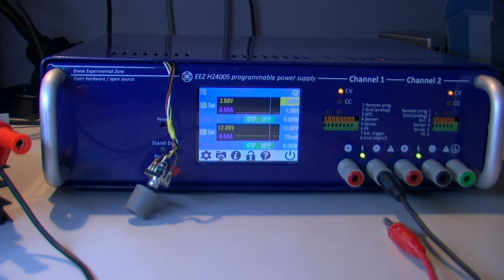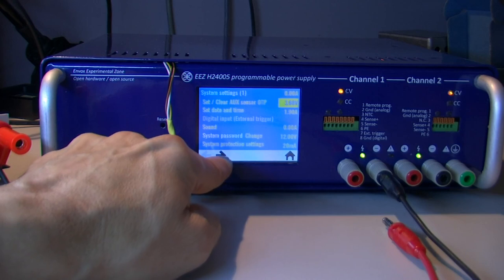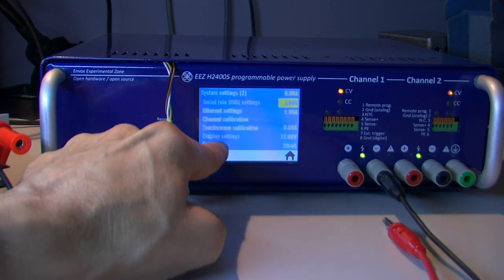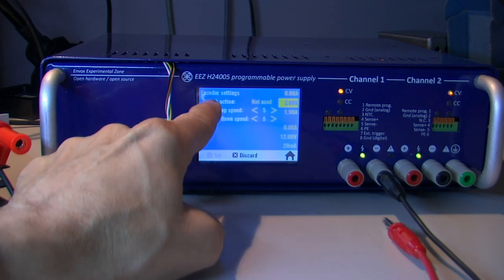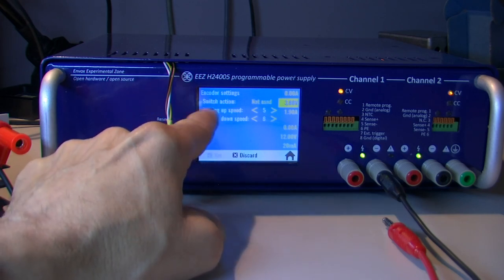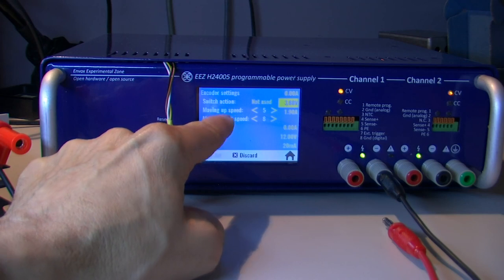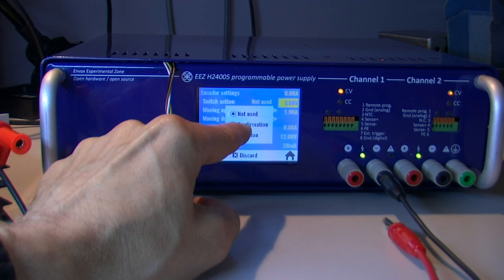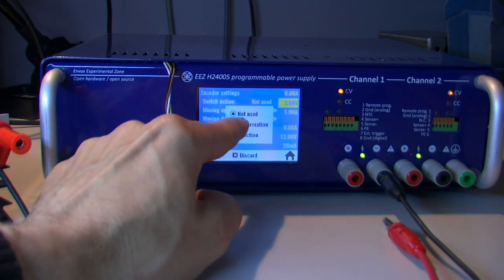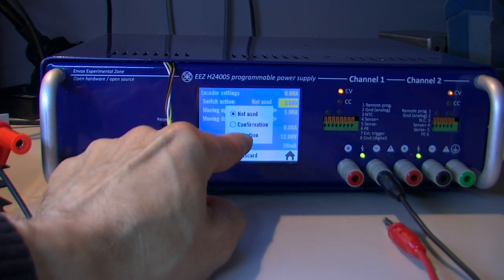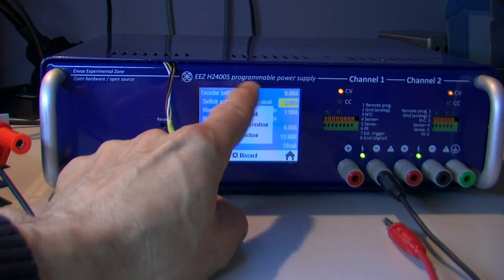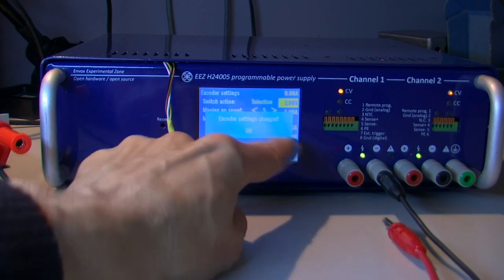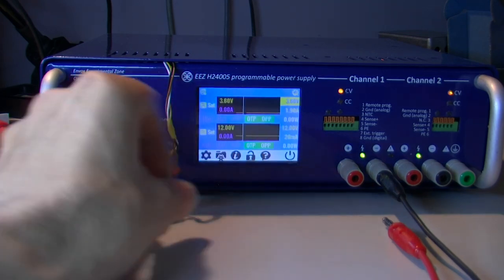I can show you what is currently possible. Here in system settings page 2, there is a new encoder page. We have switch action, moving up speed, and moving down speed. For switch action, it's not used, it can be used to confirm input value or to select next value. We can first start with selection and next value to see what it means.